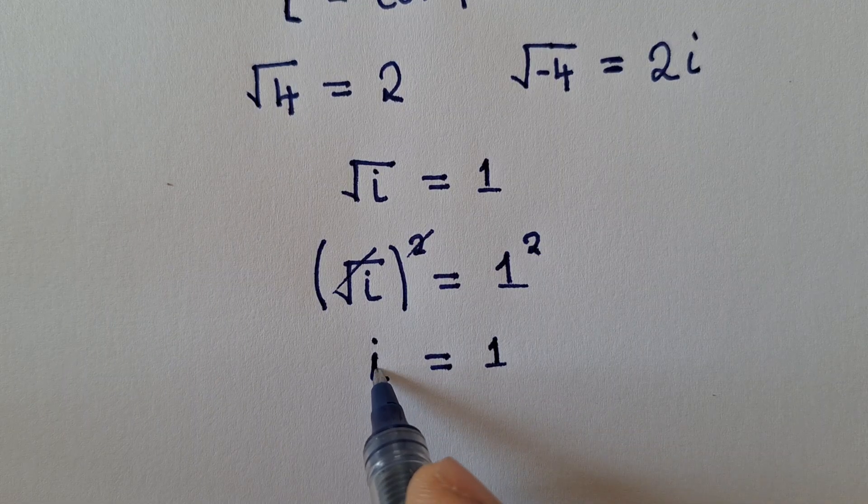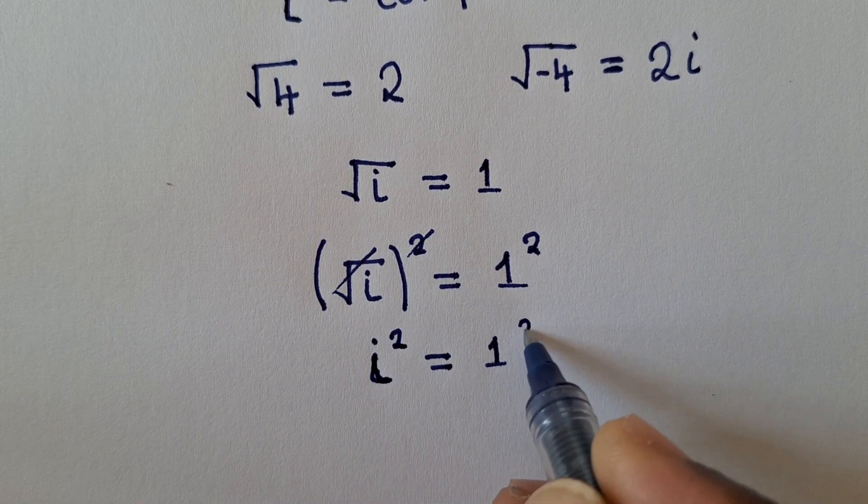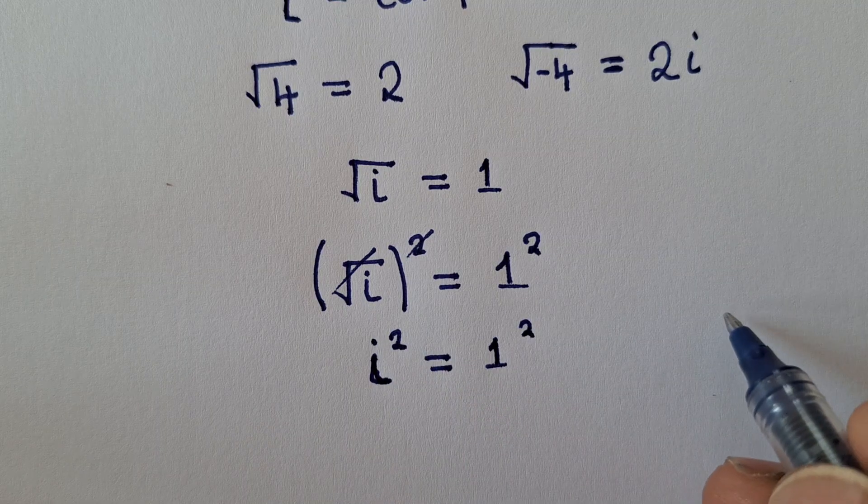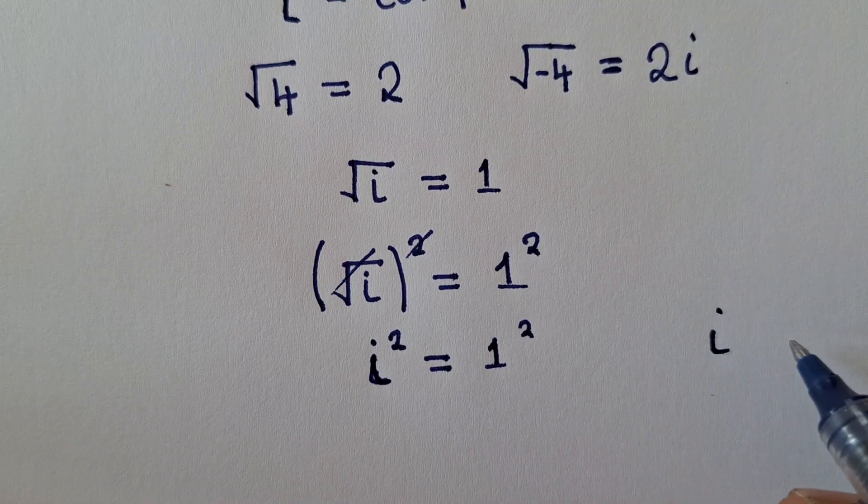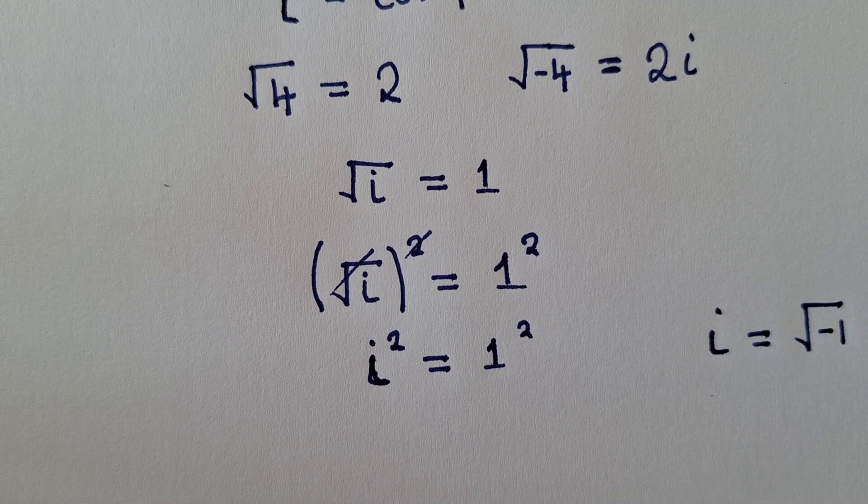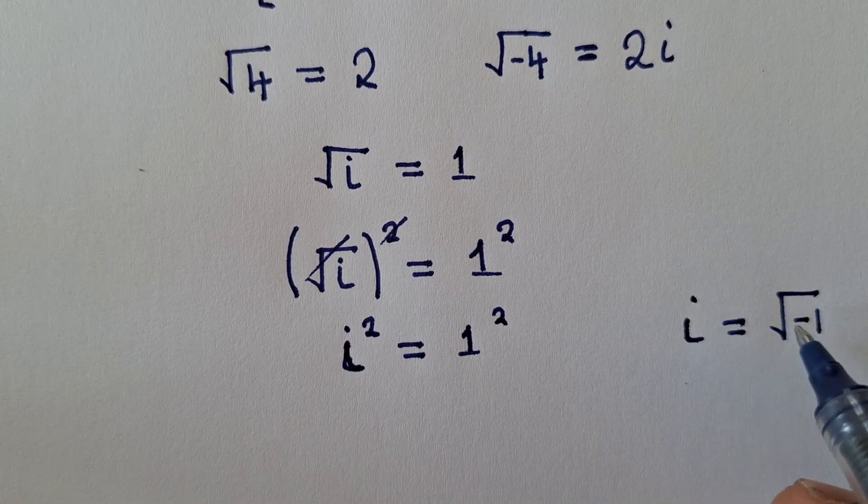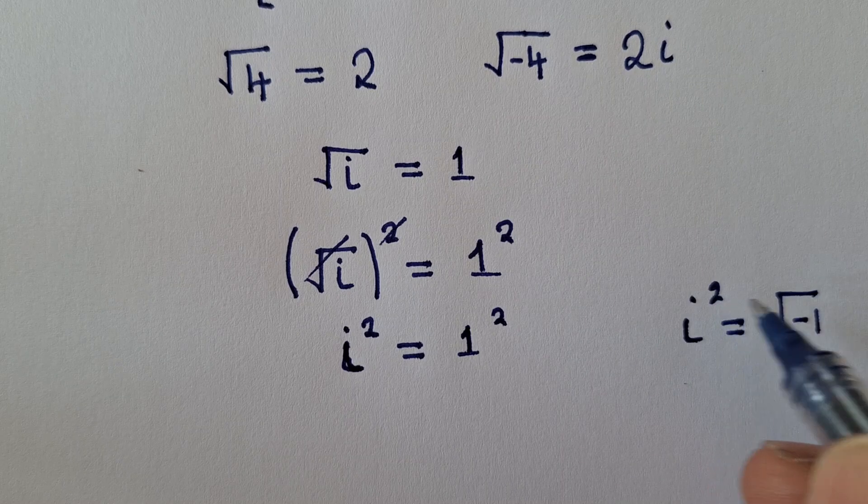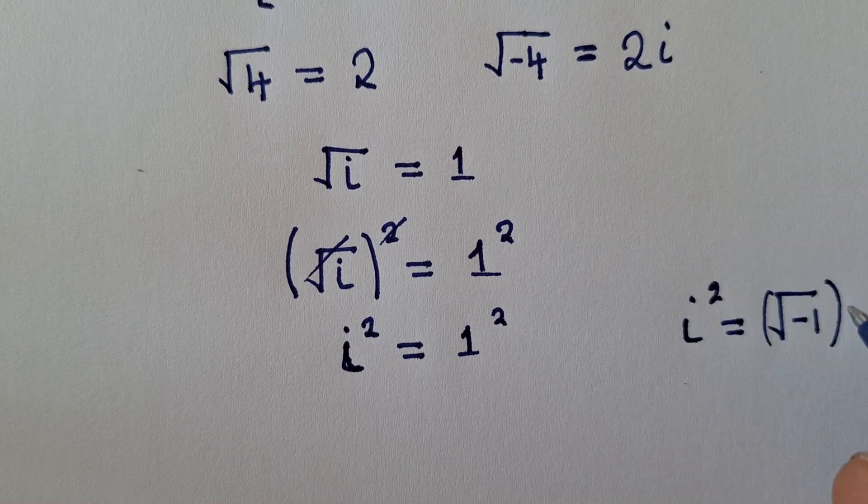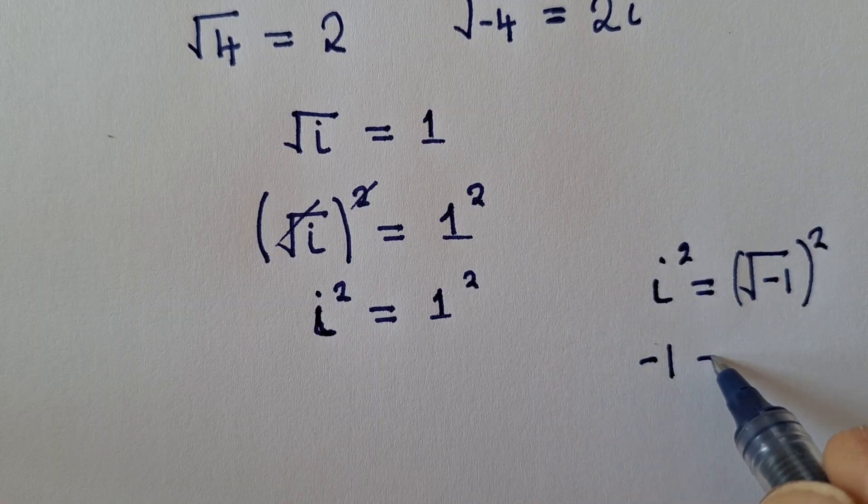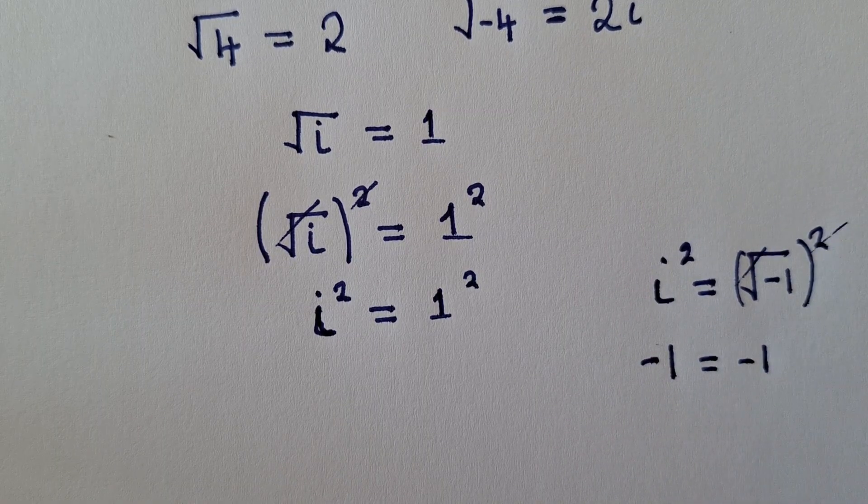Again, here I can introduce a power 2 and a power 2. The reason why I've decided to introduce power 2 here, it's because I know that i is equal to the square root of negative 1. Such that if I put a power 2 here and also power 2 here, this will give me negative 1 equal to negative 1 here. The root and this will cancel.